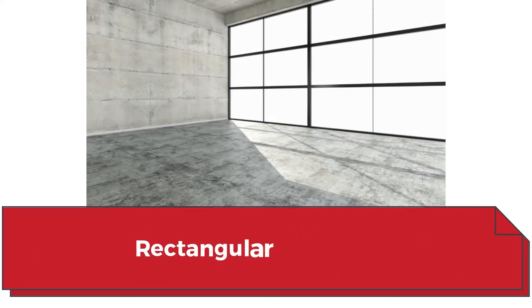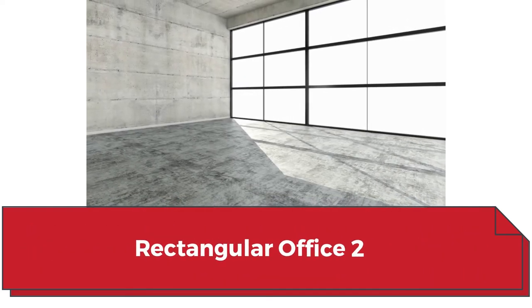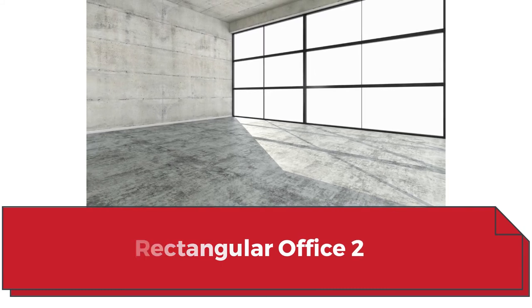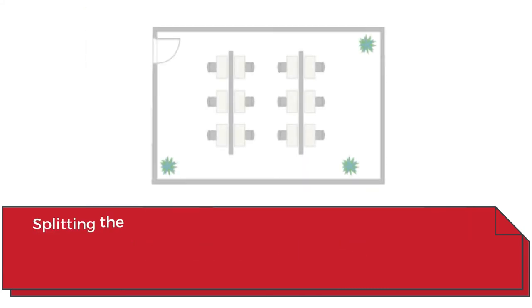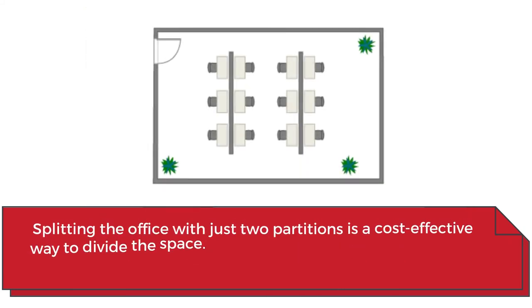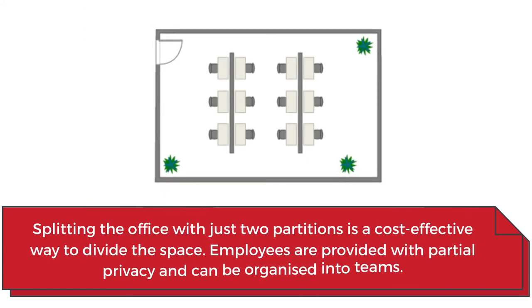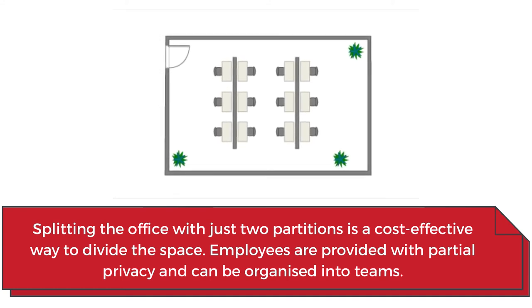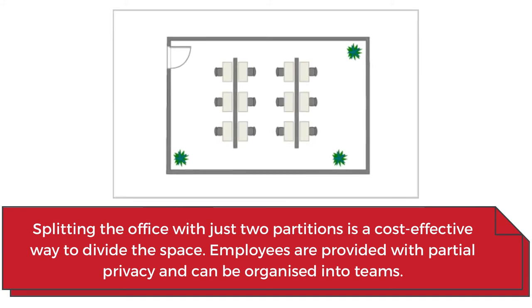Rectangular office. Splitting the office with just two partitions is a cost-effective way to divide the space. Employees are provided with partial privacy and can be organized into teams.